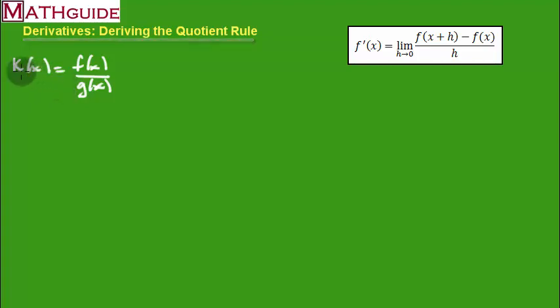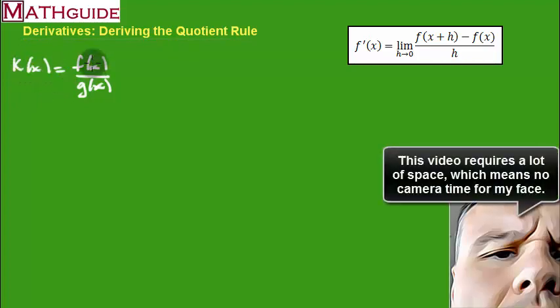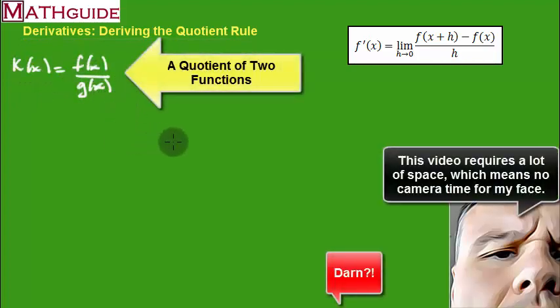Alright, so I've started us out here by saying that there's a function that is the quotient of two other functions. Yes, keep in mind that g of x cannot be equal to zero.